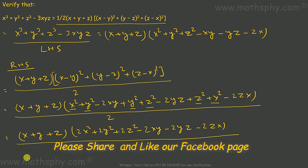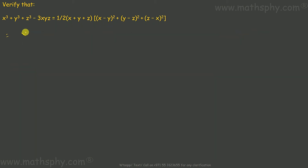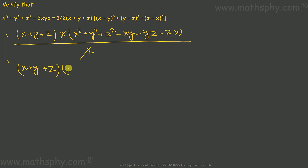So this will be x plus y plus z, all over 2. Here I can take 2 as common, giving x plus y plus z times x squared plus y squared plus z squared minus xy minus yz minus zx, all over 2. The 2 and 2 cancel, so this comes to x plus y plus z times x squared plus y squared plus z squared minus xy minus yz minus zx.